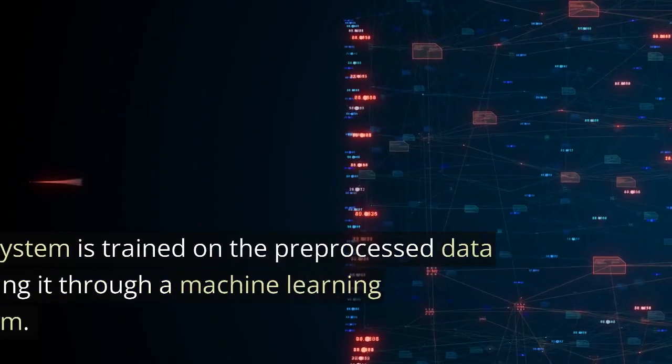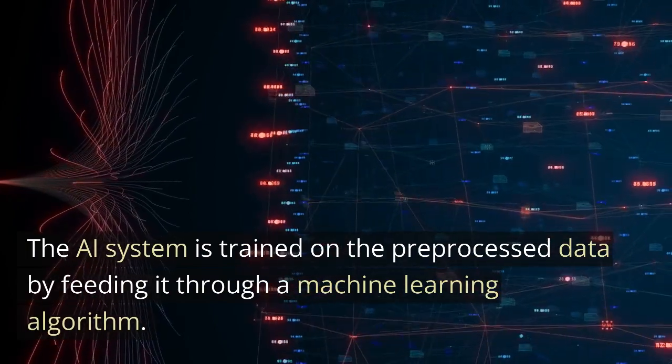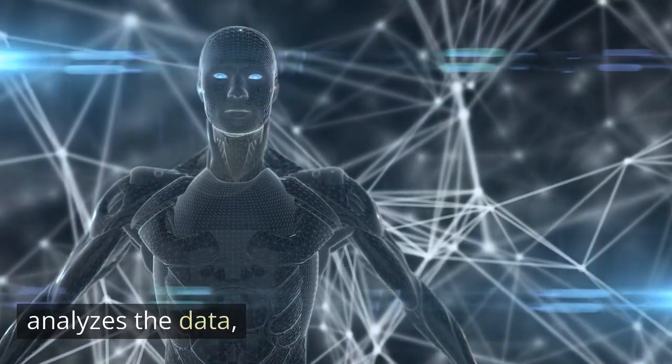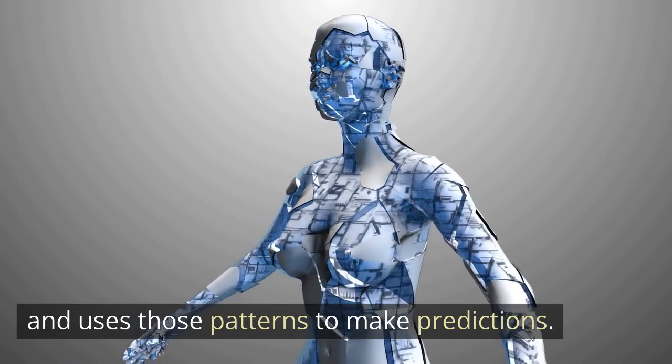Training. The AI system is trained on the pre-processed data by feeding it through a machine learning algorithm. The algorithm does a few important things. Analyzes the data, identifies patterns, and uses those patterns to make predictions.